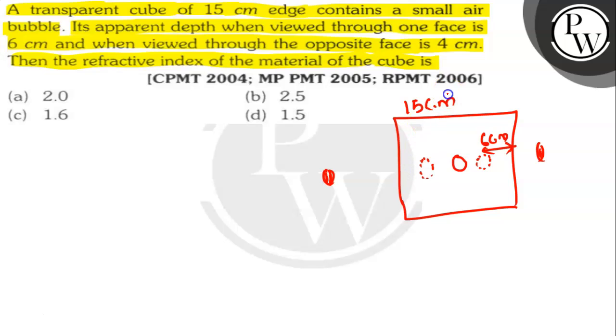So the distance from the observer is 4 cm. On the opposite side it is showing that 4 cm. The total is given here 15 cm. And we have to find out the refractive index here.